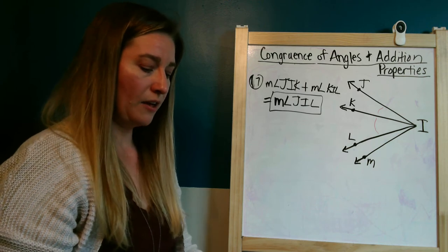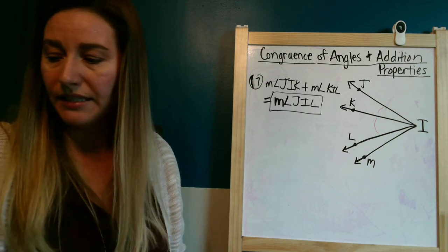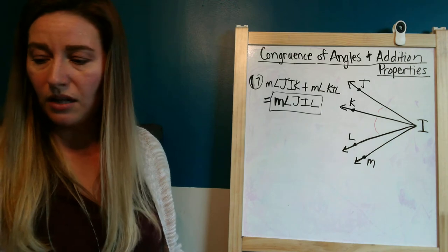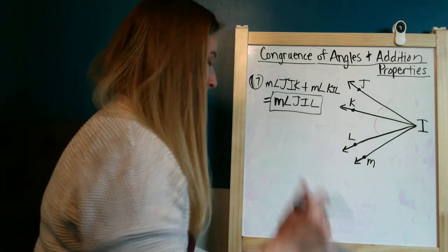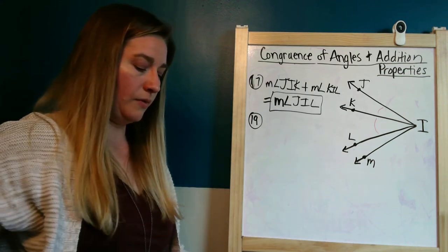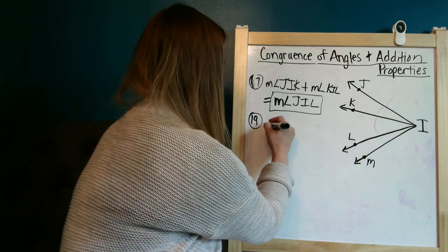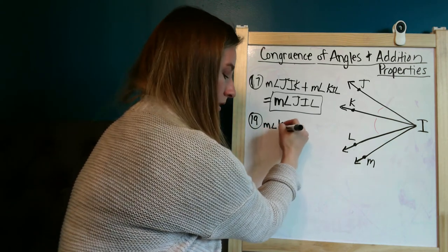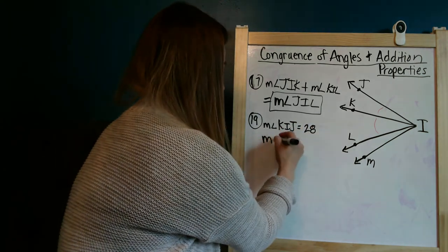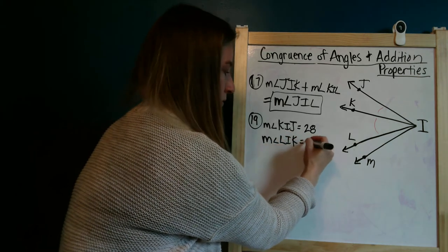So if I look at number 19, number 19 asks us to find the measure of angle LIJ. Okay, so we are given the measure of angle KIJ is equal to 38, and the measure of angle LIK is equal to 39.